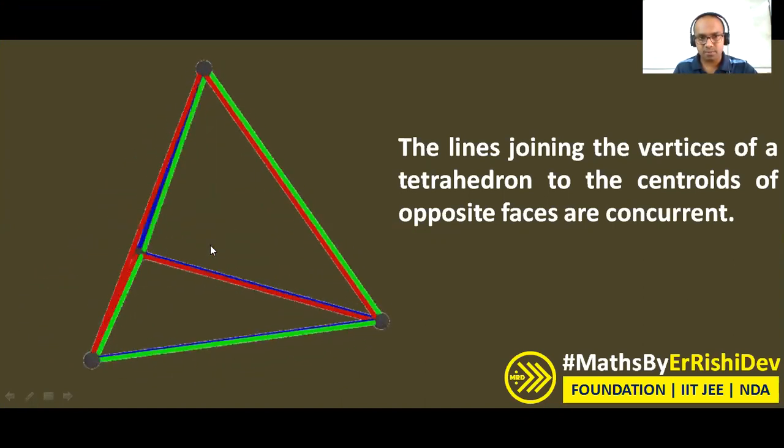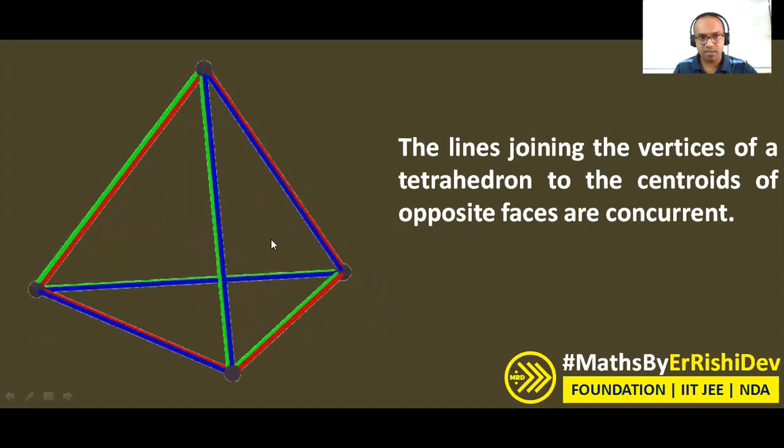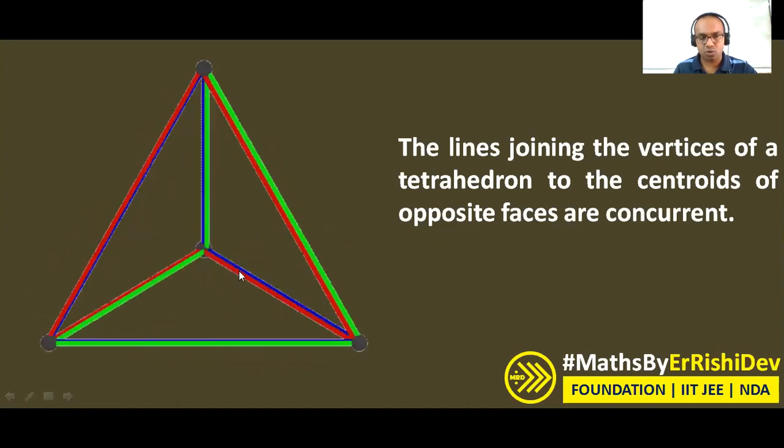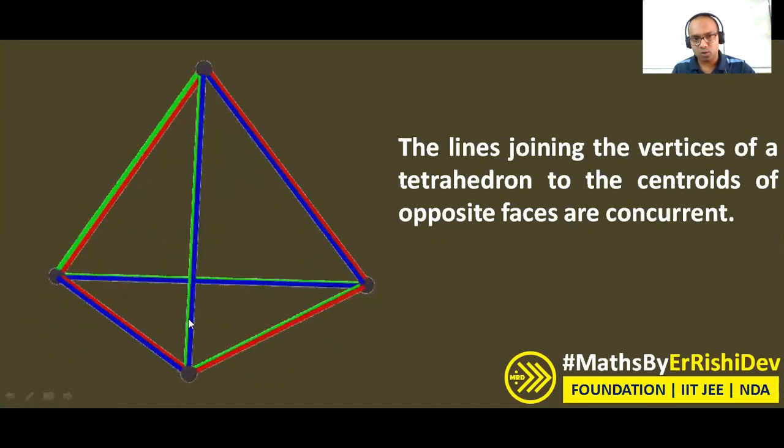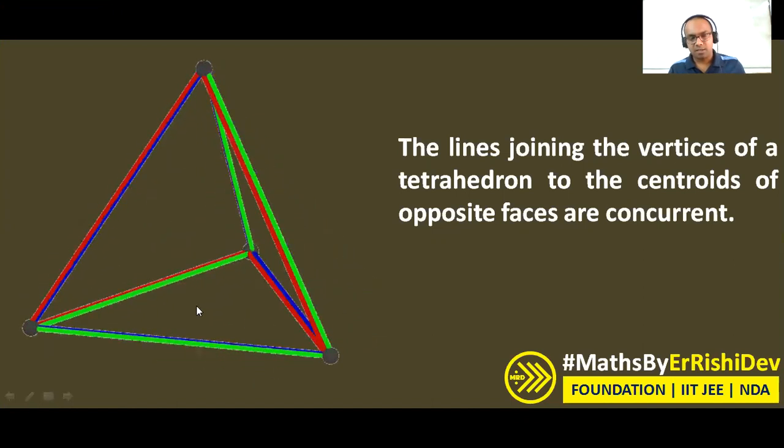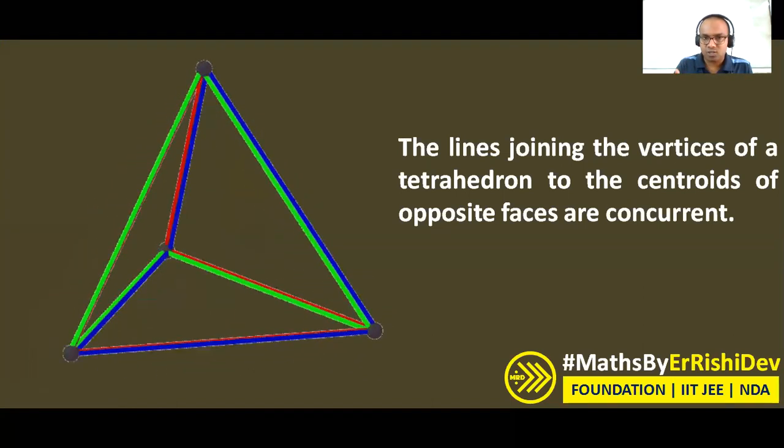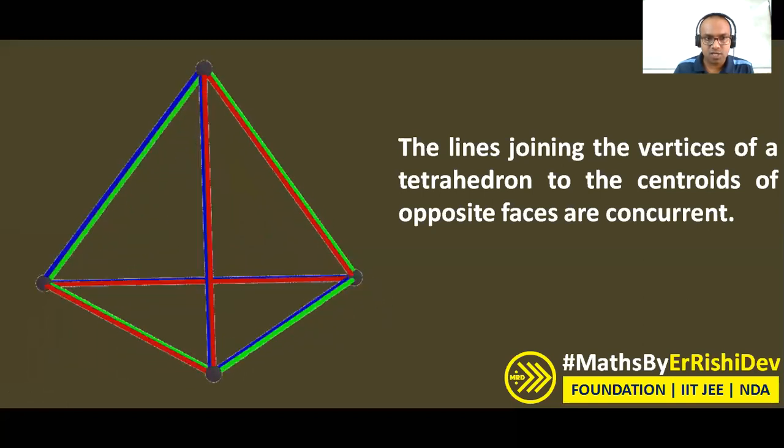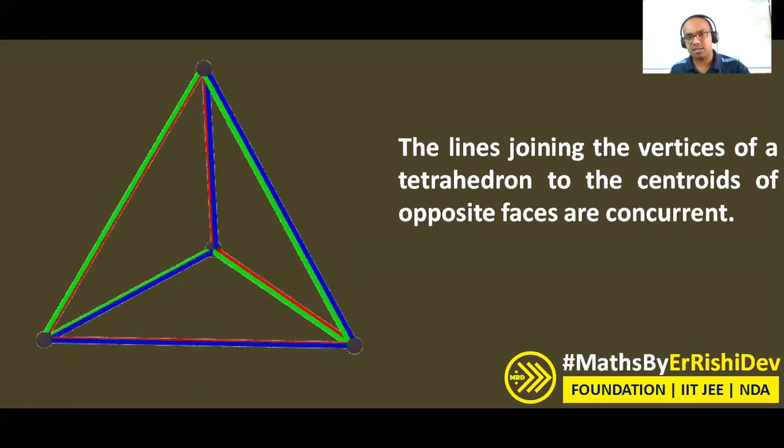The four surfaces are in this way: to understand, the three surfaces which are the lateral surface area and one is the base. Three are the lateral surfaces and one is the base, so totally here we have four triangles.